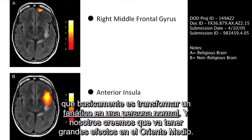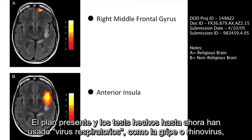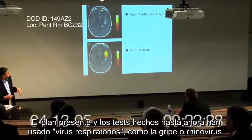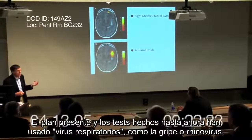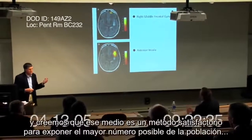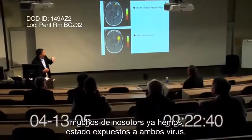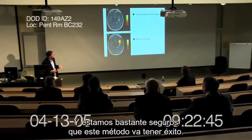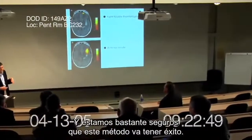And we think that will have major effects in the Middle East. How would you suggest that this is going to be dispersed? The virus? Well, the present plan and the tests that we've done so far have used respiratory viruses, such as flu or rhinoviruses. And we believe that that's a satisfactory way to get the exposure of the largest part of the population. Most of us, of course, have been exposed to both of those viruses. And we're quite confident that this will be a very successful approach.